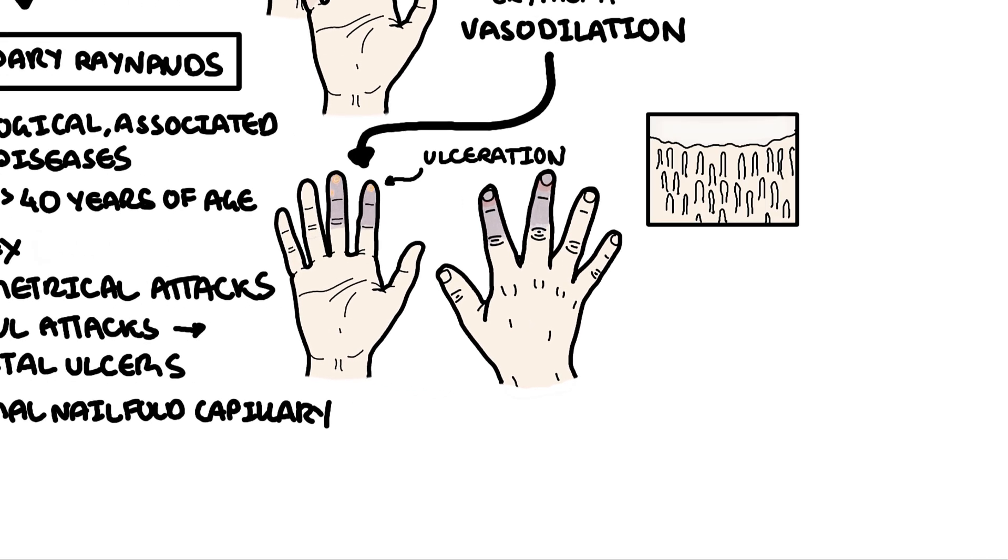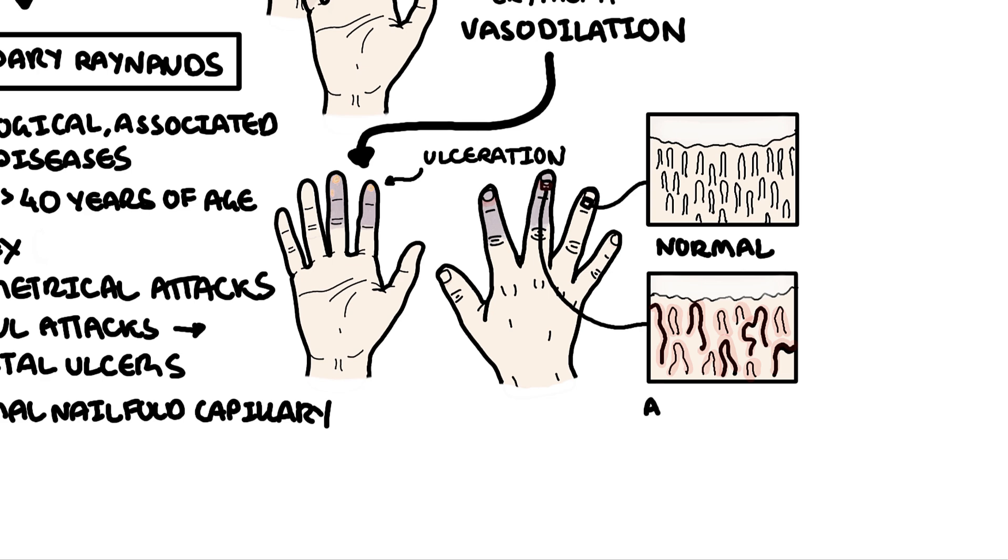In this diagram, you can see that the capillaries at the base of the nail bed look almost like hairpin loops. This is compared to a nail bed that is seen in secondary Raynaud's phenomenon.